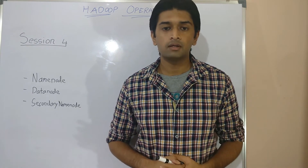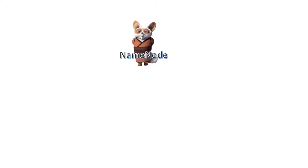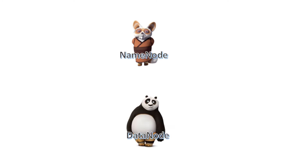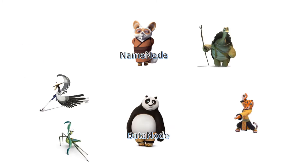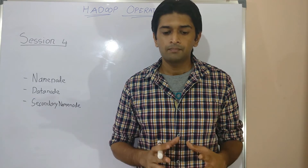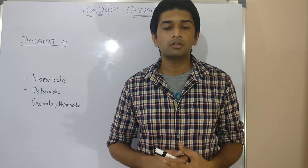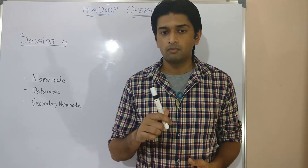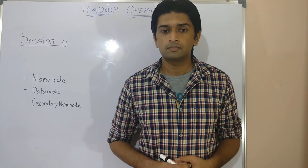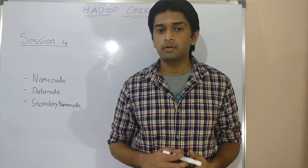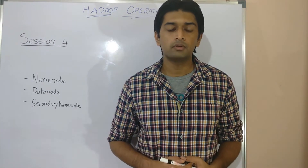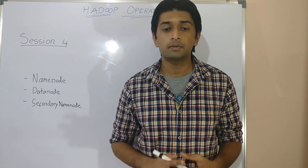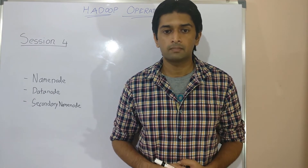HDFS has two main components: the NameNode, which is like a master service, and the DataNode, which is like a slave service. Apart from these two there are several other supporting components, one such example being the secondary NameNode. In this session I'll be covering these three components, which is sufficient for setting up a single NameNode HDFS setup.